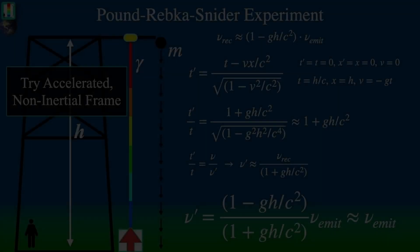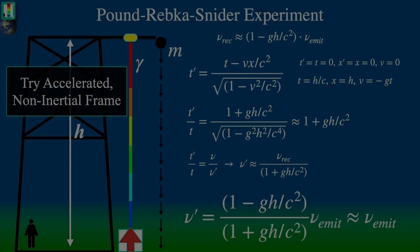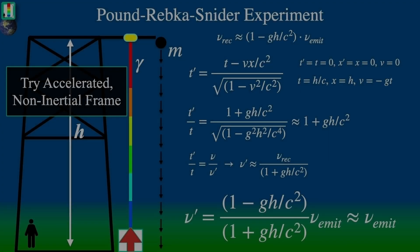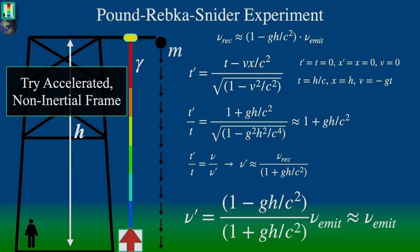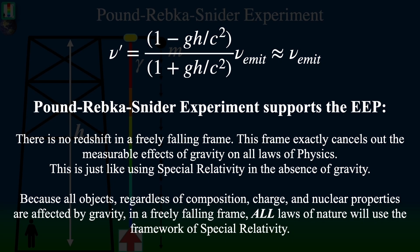This is a test of the assertion of the Einstein equivalence principle's local positional invariance. It's obviously not a test of local Lorentz invariance. We'll chat about more of these tests later. This entire thing is so important, it's worth repeating it.